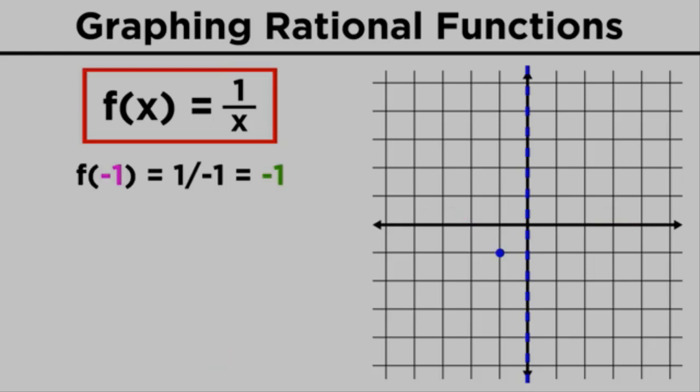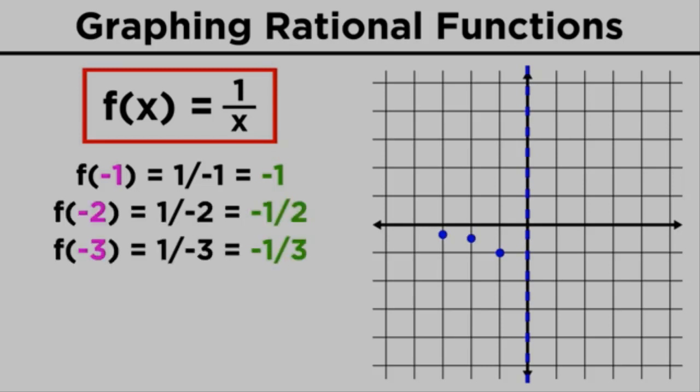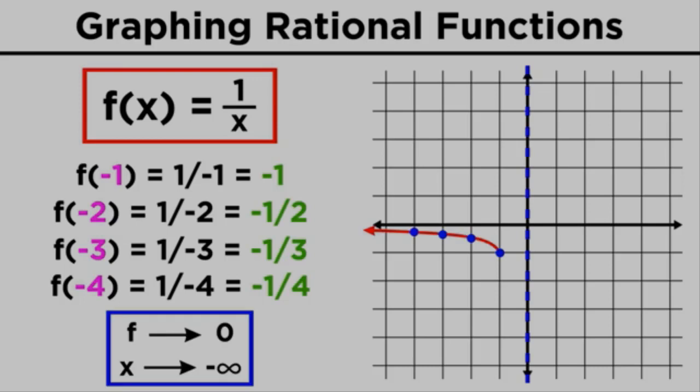Negative one gives us negative one, so negative one, negative one is part of the function. As we go left, we get closer and closer to zero from the negative direction, with the limit of reaching zero as x approaches negative infinity, so the function approaches zero, but never quite gets there when we go left.